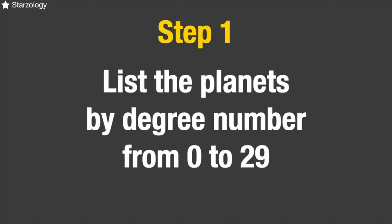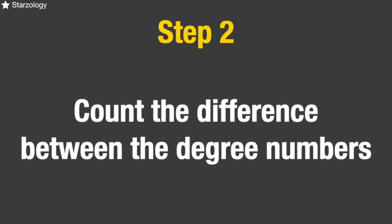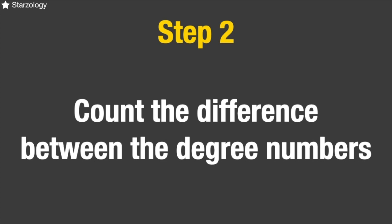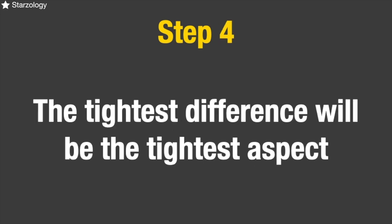Step one is to list the planets in your chart by degree number from zero to 29. Step two is to count the difference between the degree numbers of two planets. Step three is to check that the planets are in a Ptolemaic aspect. And step four is that the tightest difference will be the tightest aspect. It's pretty straightforward — let's go through it with Andy Warhol's chart.